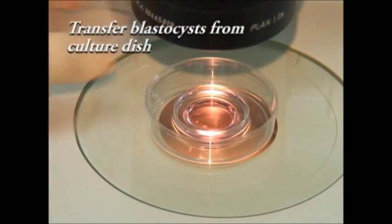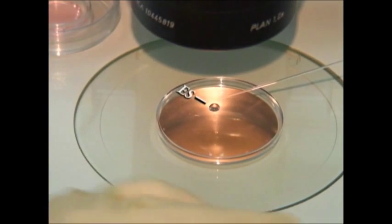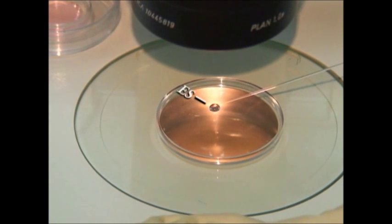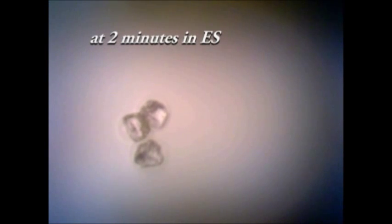If blastocysts need to be vitrified, they are kept in the equilibration solution for up to nine minutes. At around two minutes, you could see the embryo shrinking and equilibrating and by nine minutes, they have expanded to the original size confirming equilibration.